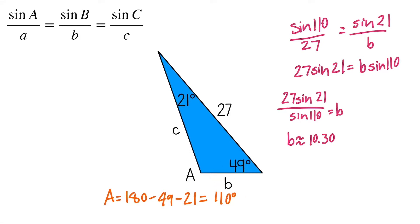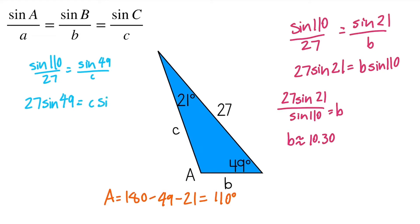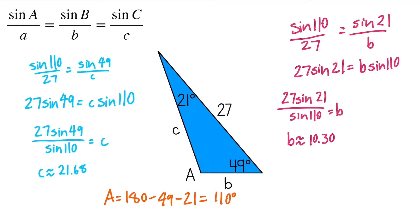Now I know side B, and all I need is side C. Using the same method with the known ratio: sine 110 over 27 equals sine of 49 degrees over C, because 49 is opposite of C. Cross multiplying, 27 sine 49 equals C sine 110. Dividing both sides by sine 110, C is approximately 21.68. So now we know all the missing parts: angle A is 110 degrees, side B is 10.30, and side C is 21.68. We've finished this triangle.